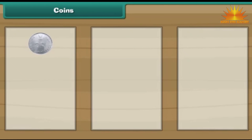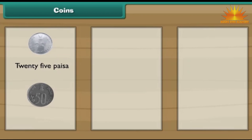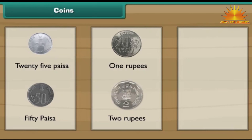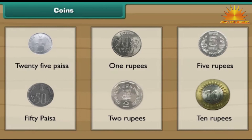Look at this small coin. It is a 25 paisa coin. Look at this slightly bigger coin. It is a 50 paisa coin. This is a 1 rupee coin. This is a 2 rupee coin. This is a 5 rupee coin. This is a 10 rupee coin.